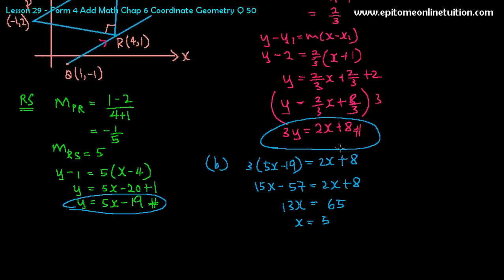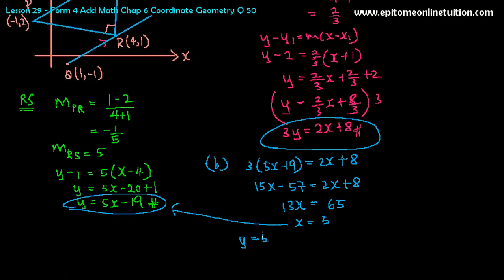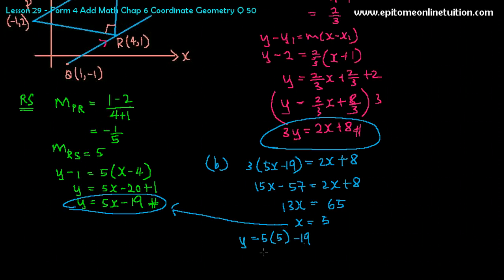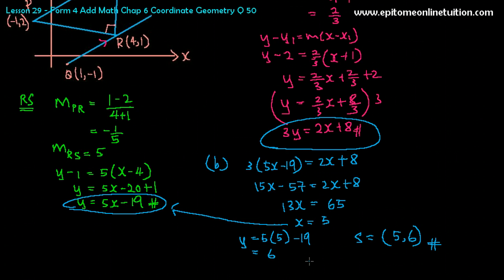So now let's find the Y coordinate by substituting into this. So Y would equal to 5 times 5 minus 19. That is a 6. So hence, the coordinate of point S would equal to 5 and 6. And finish. This is the complete answer for question 50. So this is how some SPM question will look like. And we will do question 51 in the next video.